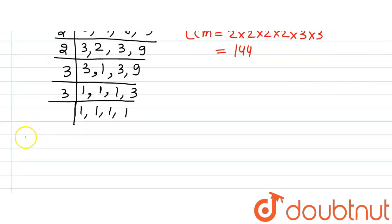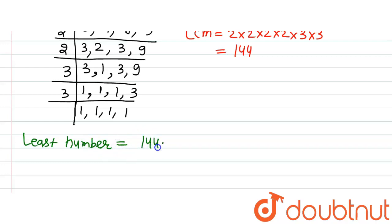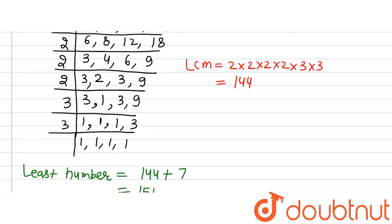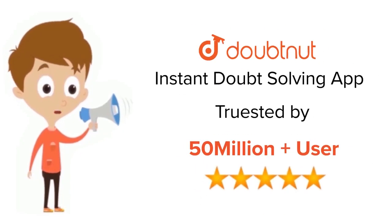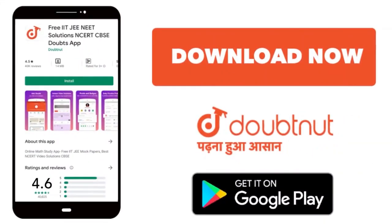So the least number asked in the question will be equal to LCM + 7, that is 144 + 7 = 151. And this is our answer to this question. Thank you. For class 6 to 12, IIT JEE and NEET level, trusted by more than 5 crore students — download the Doubtnut app today.